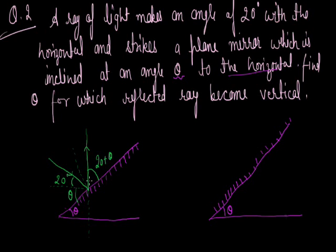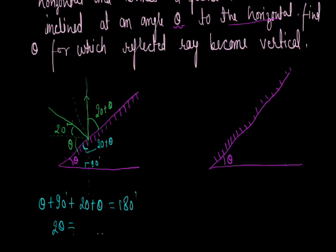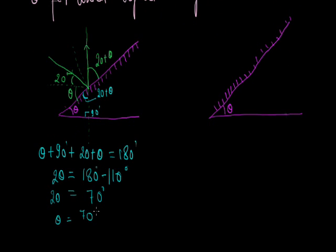So we have 20 plus theta on both sides of the normal. Since the reflected ray must be vertical, the angle between the reflected ray and the vertical is 90 degrees. Considering the triangle formed, the sum of angles equals 180 degrees: theta plus 90 plus 20 plus theta equals 180 degrees. So 2 theta equals 180 minus 110 equals 70 degrees, giving theta equals 35 degrees.